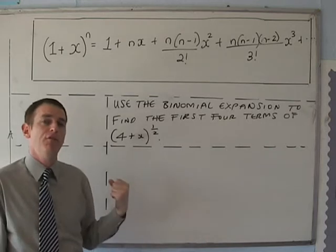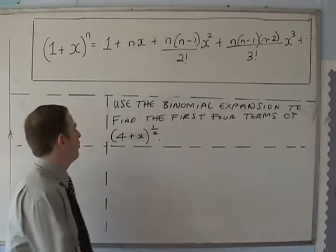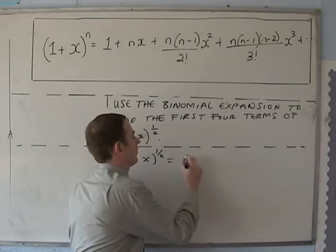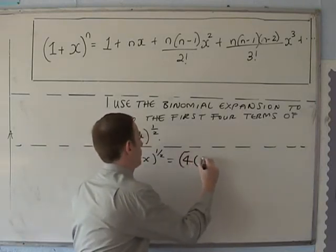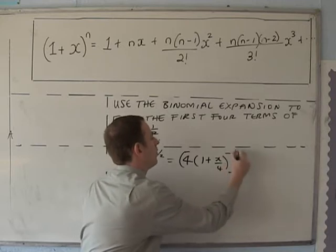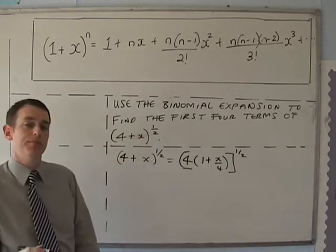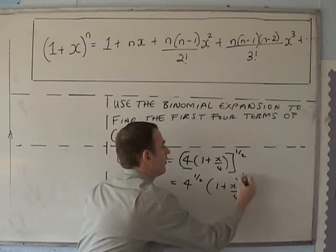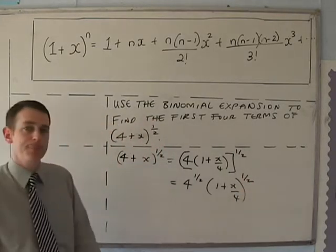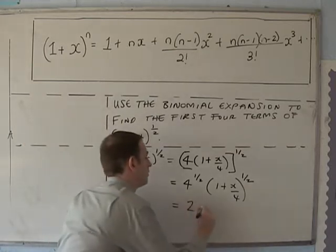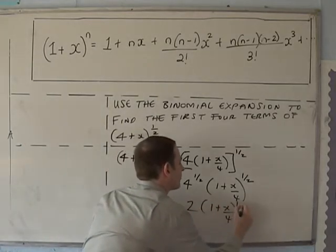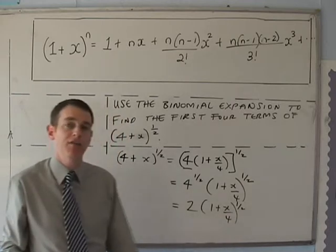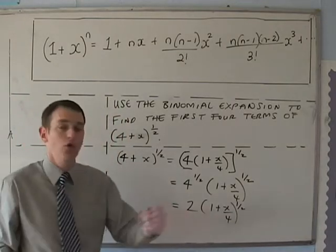So we need to pull that 4 outside of that bracket. If we pull that 4 outside, (4 + x)^(1/2) is exactly the same as [4 × (1 + x/4)]^(1/2), which is exactly the same as 4^(1/2) × (1 + x/4)^(1/2). So of course 4^(1/2) = 2. We now need to work out (1 + x/4)^(1/2) as we would normally, and then multiply it all through by 2.